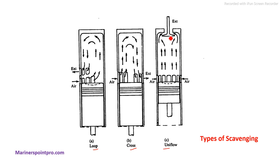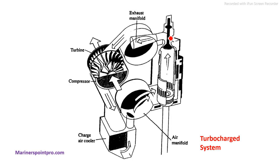Next is the turbocharger system. In this system, when the exhaust gas is expelled during the exhaust stroke, it is transferred to the turbine, which rotates. On the same shaft a compressor is mounted, which also rotates and draws air from the surroundings. This air is then passed through a charge air cooler so that the density of the charge air can be increased, allowing a greater amount of air to be fed into the system.